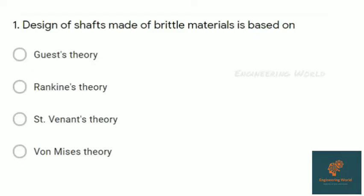Here is the first question: Design of shafts made of brittle material is based on first guest theory, Rankine theory, Tresca theory, or von Mises theory. The correct answer is Rankine theory. Actually, for brittle material, Rankine theory is applicable.